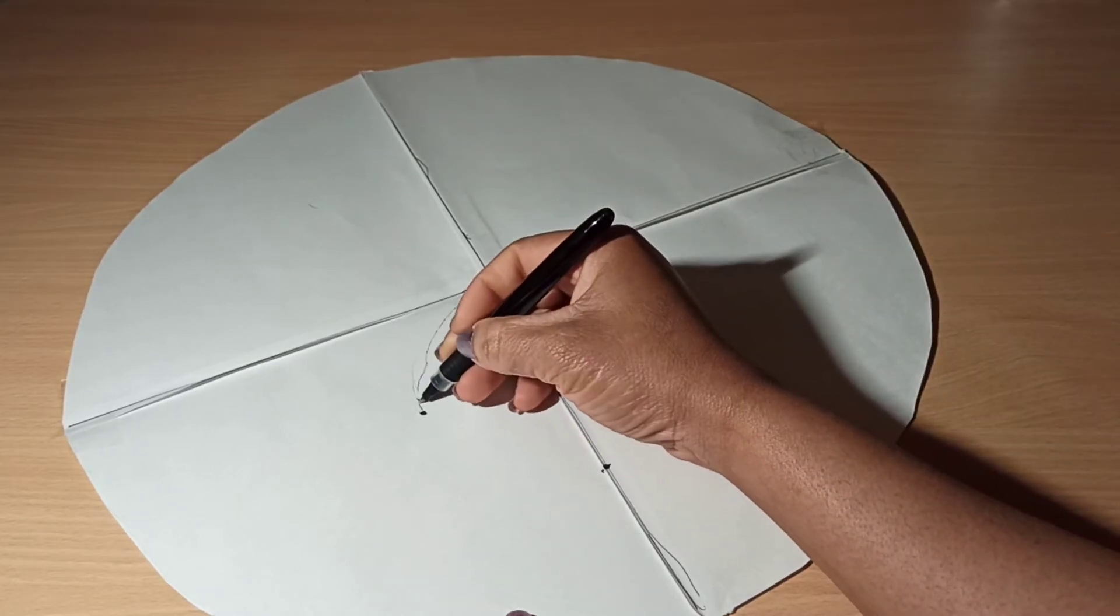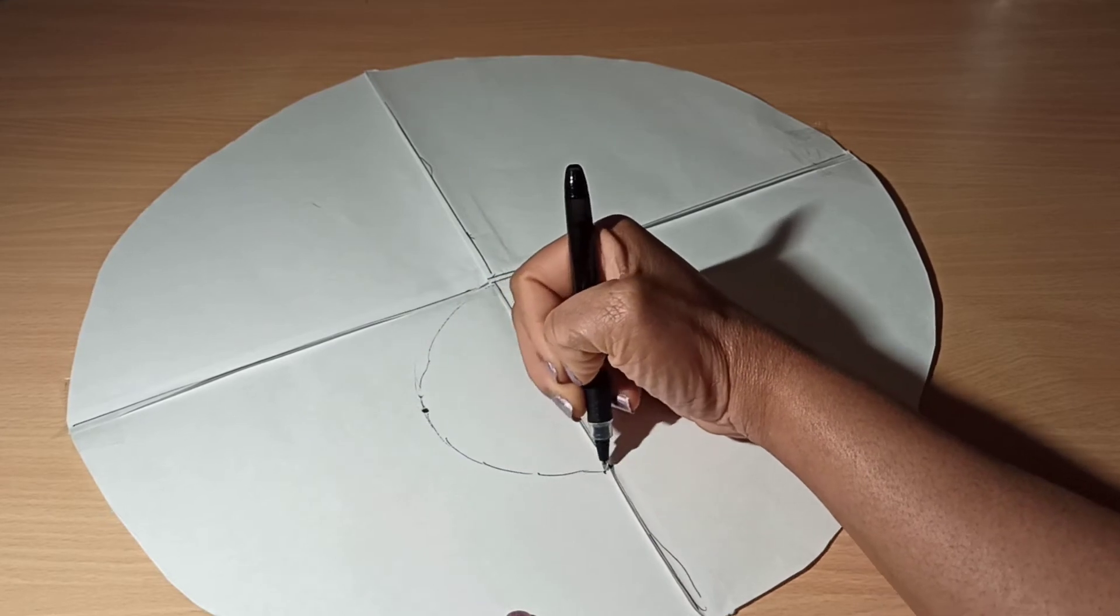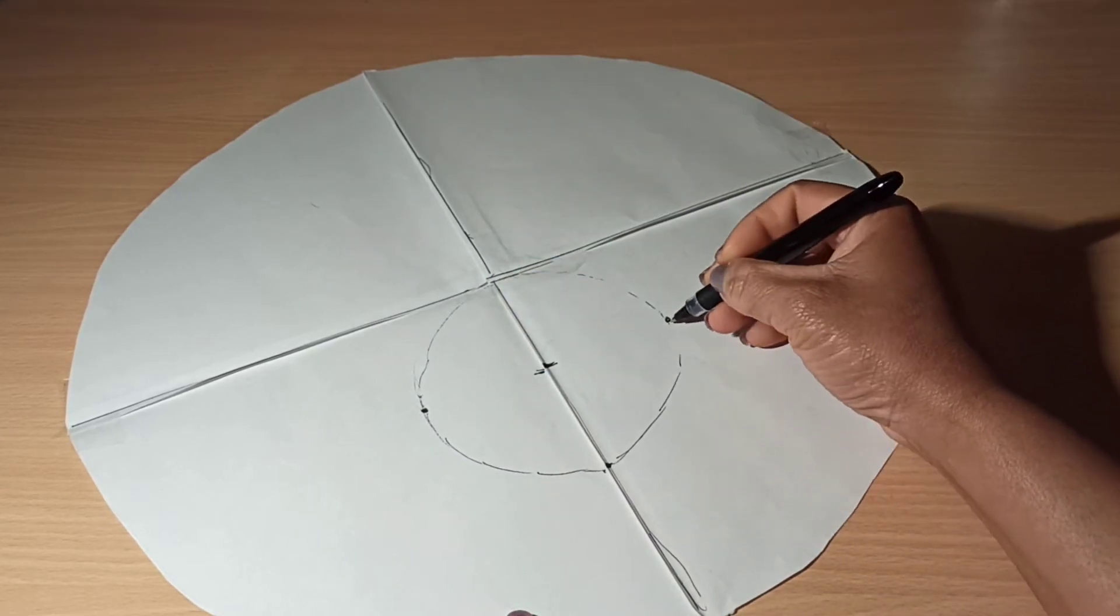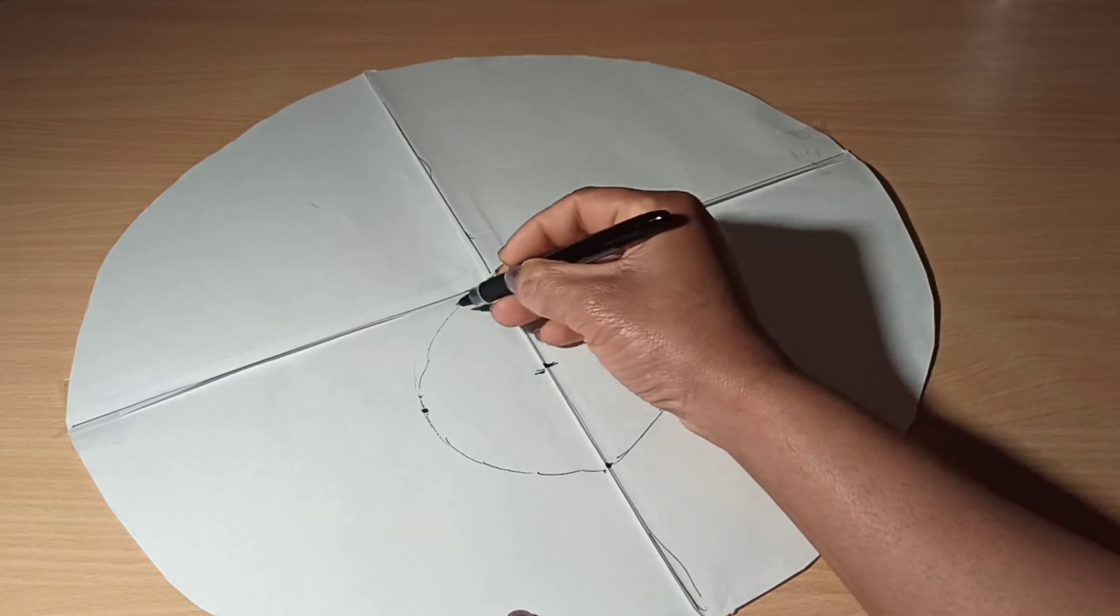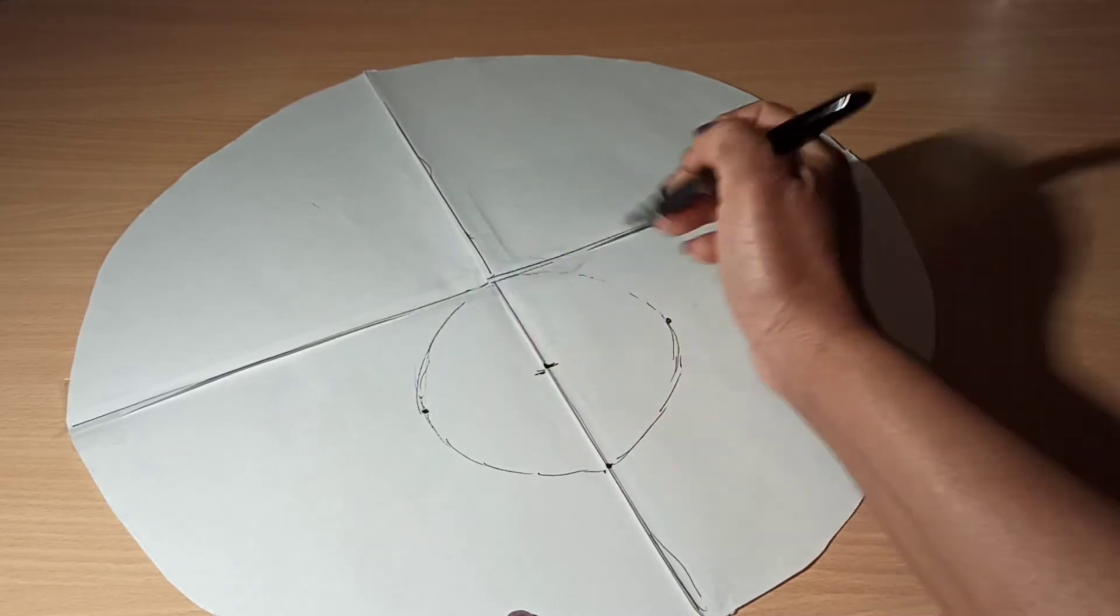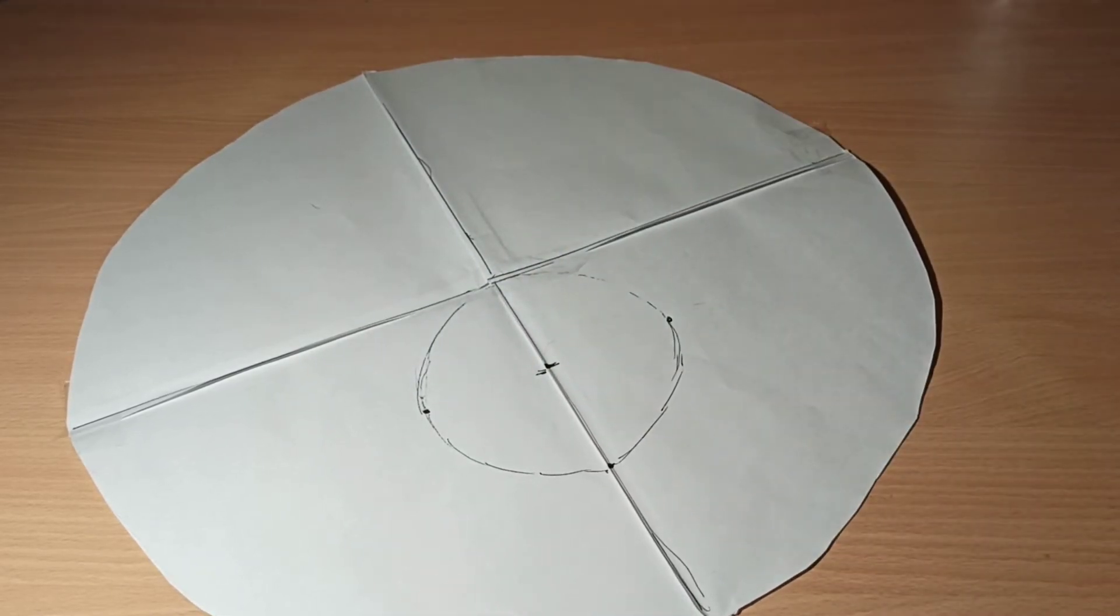You can use your curved ruler to give you that perfect circle. So you want to go ahead and draw that perfect circle, guys. Like I said, use your curved ruler to give you that perfect circle.